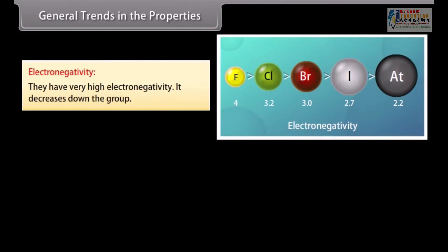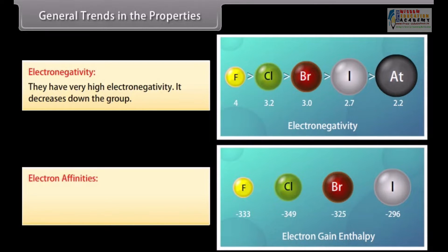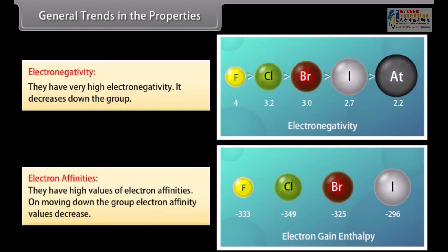Halogens have very high electronegativity, which decreases down the group. Fluorine is the most electronegative element in the periodic table. They have high values of electron affinities; on moving down the group, electron affinity values decrease because the size of the atom increases. A low value of electron affinity for fluorine is due to the small size of the fluorine atom — in its compact 2p subshell, the added electron does not feel much attraction, resulting in a low value of electron affinity.